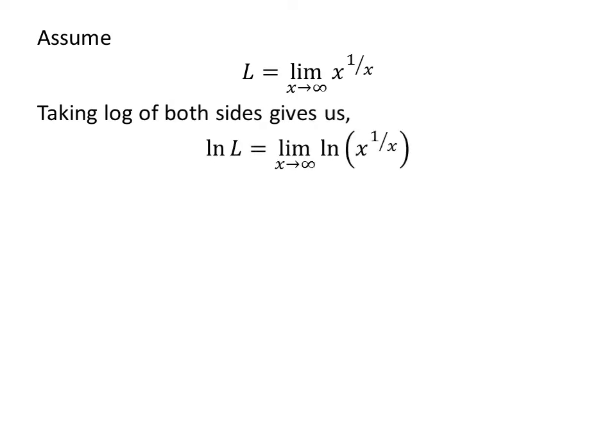As natural log is an increasing function and natural log of every unique value is unique, natural log of L is equal to the limit of natural log of x raised to the power of 1 upon x as x approaches infinity. We know natural log of x raised to the power of 1 upon x is equal to 1 upon x times natural log of x.